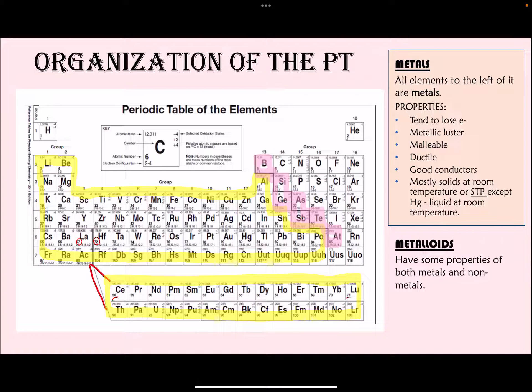Metalloids are represented by the pink-highlighted region in the periodic table. They are located next to the bold staircase you see in your reference table packet. All elements next to the staircase are your metalloids — they have properties similar to both metals and non-metals, which is why they are in the middle of the two.